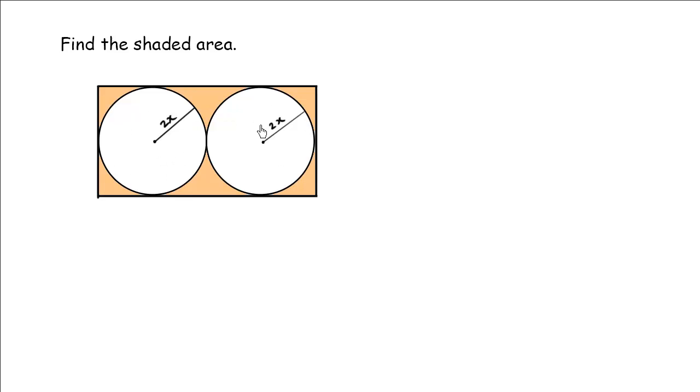These here are circles and what we have is the radius, so double the radius would be the diameter. So what we have here is this is 2x, and going across more would be 4x, so this total distance here would be 4x.